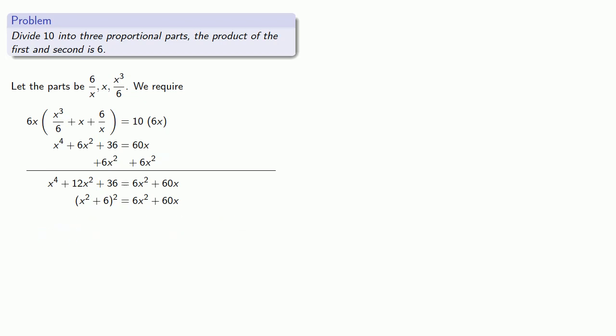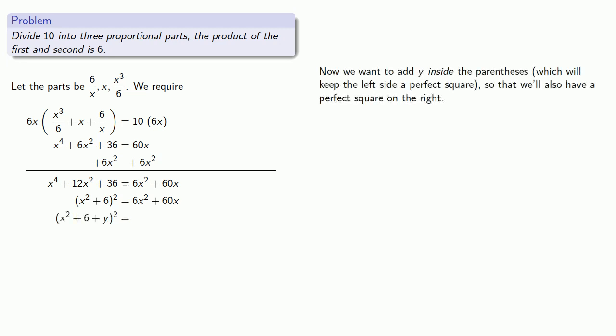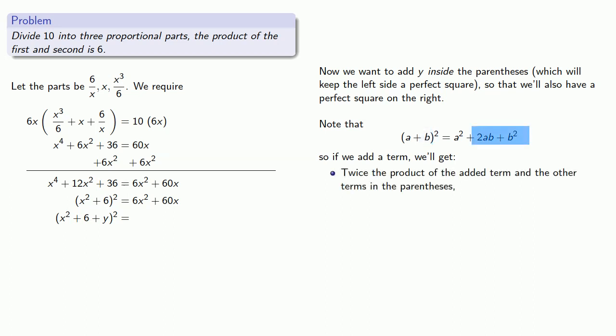The idea is that we want to add y inside the parentheses on the left, which will keep the left-hand side a perfect square, so that we'll also have a perfect square on the right. It's helpful to note that a plus b squared is a squared plus 2ab plus b squared. If we add a term inside the parentheses, we'll get twice the product of the added term and the other terms inside the parentheses and the square of the added term. So if my left-hand side is x squared plus 6 plus y, my right-hand side will be 6x squared plus 60x plus 2 times y times x squared plus 6 plus y squared.